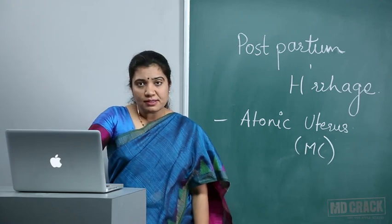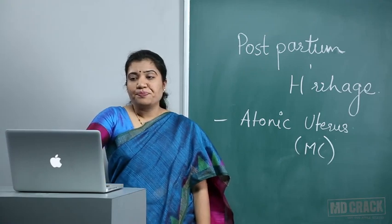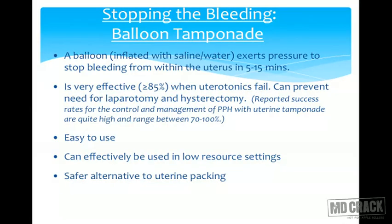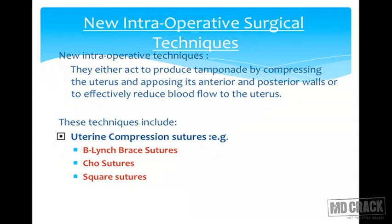Balloon tamponade exerts pressure inside the uterine cavity. It is very effective when uterotonics fail, easy to use in low-resource settings, and a safe alternative to uterine packing. If a balloon is unavailable, the uterus can be packed to achieve the same pressure effect.